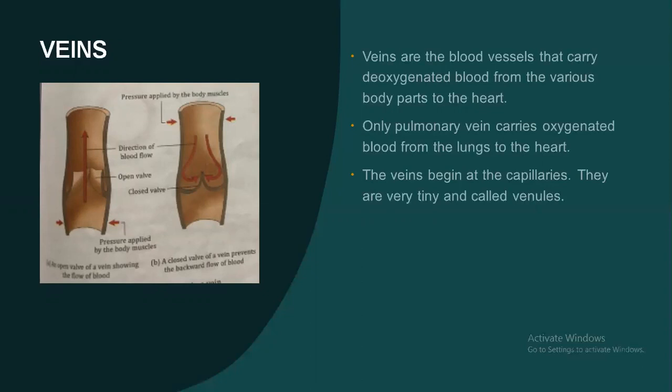Our next topic is the differences between arteries and veins. Number one: arteries are located deep beneath the skin, while veins are located close to the skin. Arteries carry oxygenated blood away from the heart to various body parts — except the pulmonary artery, which carries deoxygenated blood from the heart to the lungs. Veins bring deoxygenated blood from various body parts to the heart; only the pulmonary veins carry oxygenated blood from the lungs to the heart.